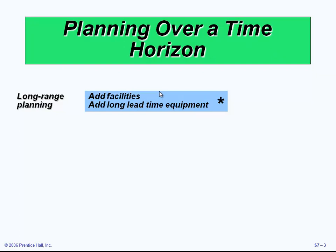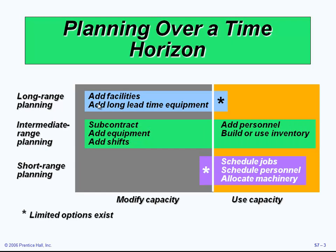To meet the required capacity, the organization has three options. The first is long-range planning, where we add facilities and long lead time equipment in the modification phase. In the intermediate range, planning begins in the modification phase but might extend during the use phase. Once we start using the machines, you might need to add personnel and build or use inventory.